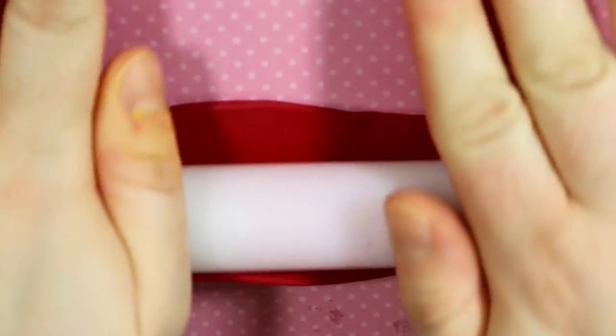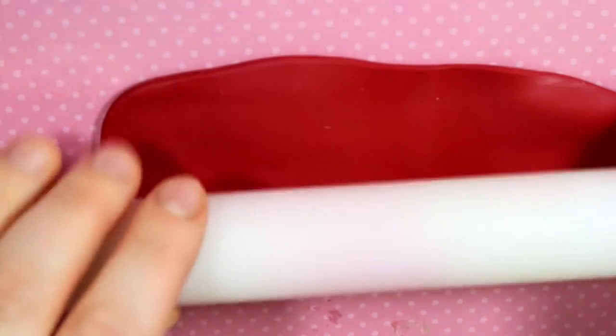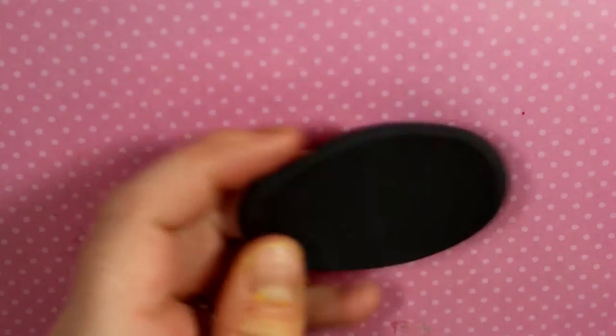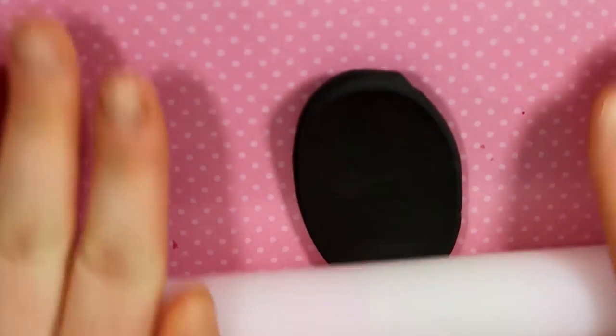So the first thing I did was I took my red clay and I rolled it out into a flat sheet. I rolled it out to be long and short so it's going to be wrapping around the pen. Then I took my black clay and I also rolled it flat to be the same length as the red.